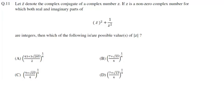Question number 11 says: if Z is a non-zero complex number for which both real and imaginary parts of Z̄² + 1/Z² are integers, then which of the following is or are possible values of |Z|? Let Z = R·e^(iθ).